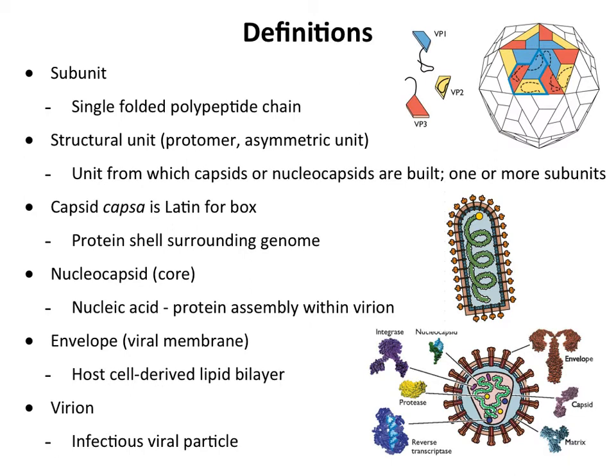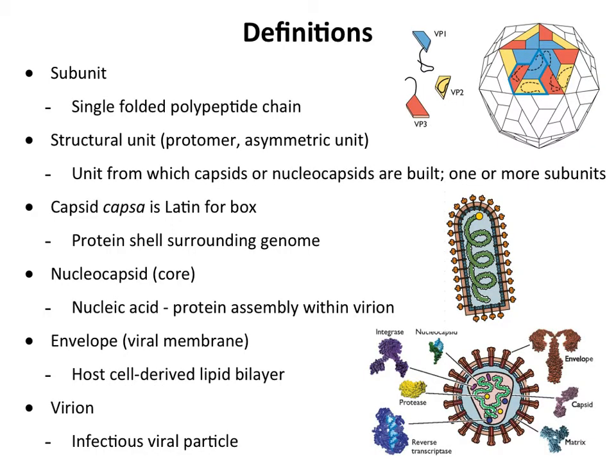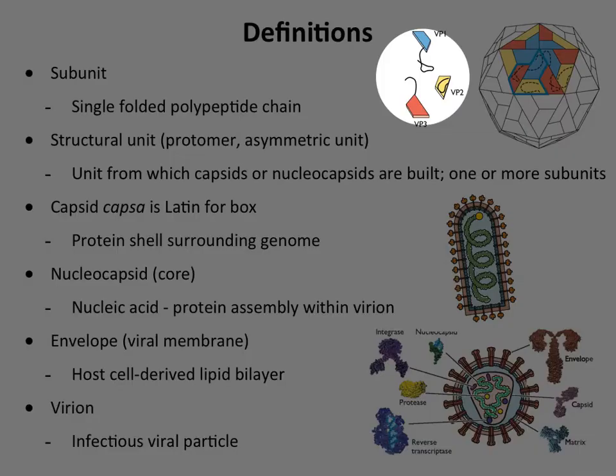Here, for example, are a couple of single polypeptides: VP1, VP2, VP3. VP is often used to describe these — they're virion proteins. These are subunits because they fold up to make a structural unit. A structural unit is the unit from which capsids or nucleocapsids are built. When these three subunits — the blue, the yellow, and the red — come together, they form a structural unit made up of one of each.